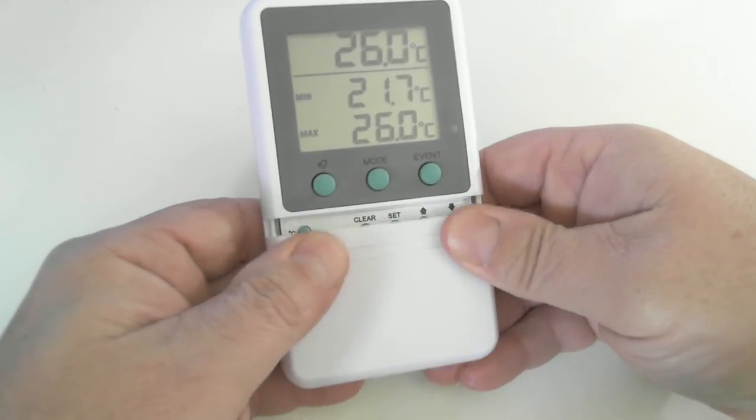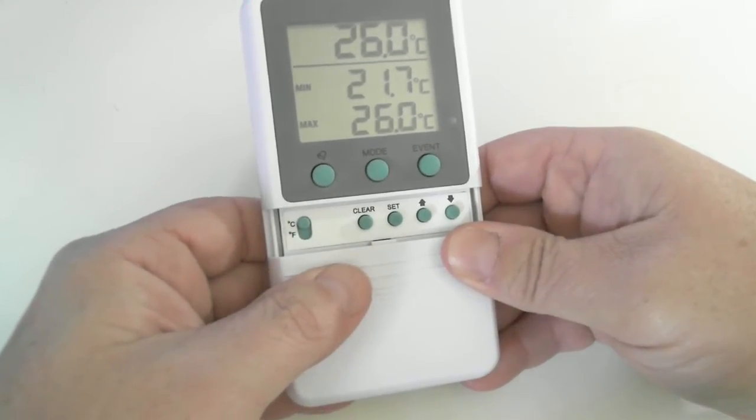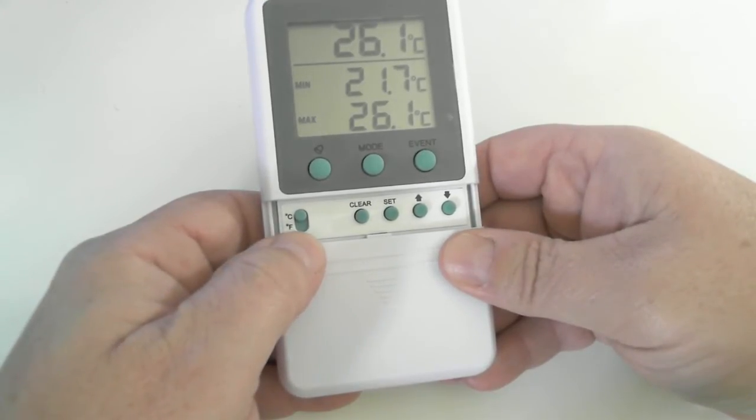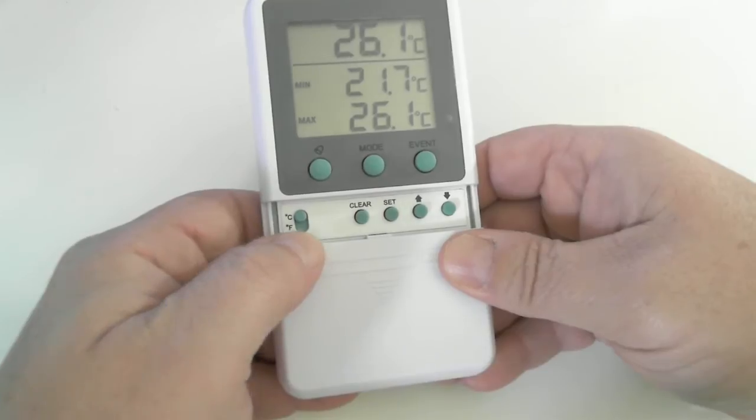Sliding the front cover down will give you access to additional controls and settings. On the far left we have a selection switch for either the Celsius or Fahrenheit temperature scale.